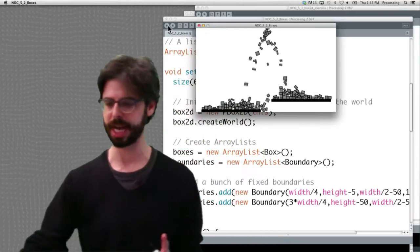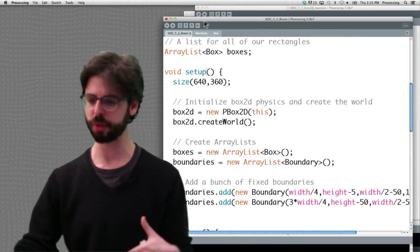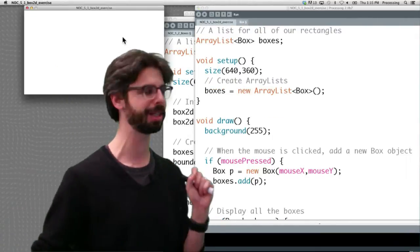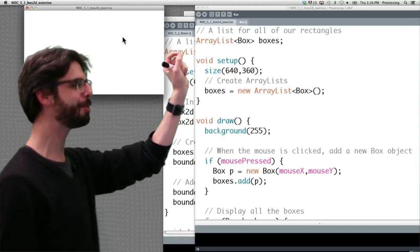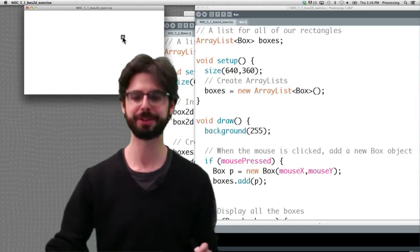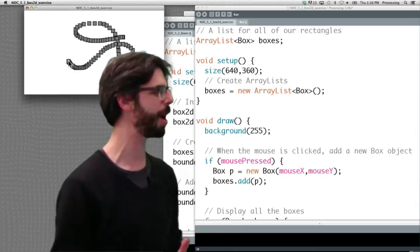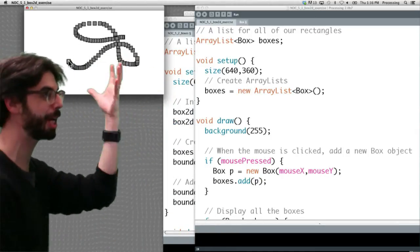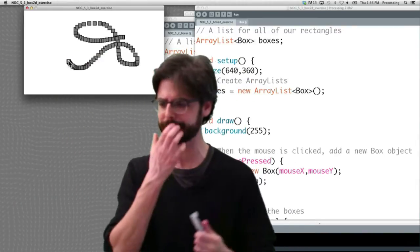So here is our exercise. We're going to back up and I'm going to show you example 5.1. What is example 5.1? It is a very simple processing sketch. We have an empty array list of box objects. Every frame we add a new box object. So here we can see I'm adding these box objects. Our exercise here is to give these box objects physics.